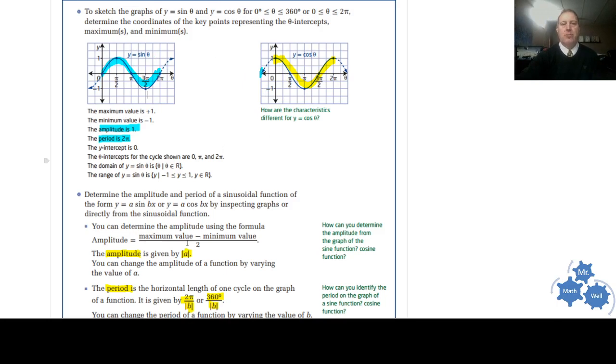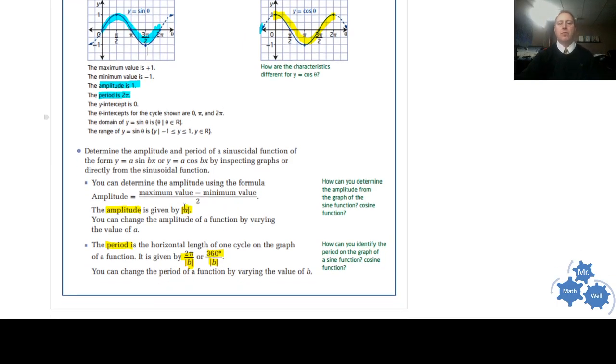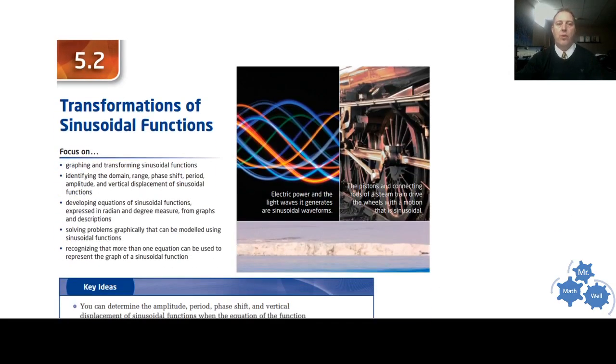The amplitude, remember, is the absolute value of a. If a is negative, that means it flips the graph vertically. But when we're talking about amplitude, we always use absolute value. So you would never have a negative 1 for an amplitude, just to recall. And really important, period length is 2π over b or 360 degrees over b. And that would be the absolute value of b as well. Period length doesn't have a direction or a sign. So that's 5.1.